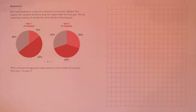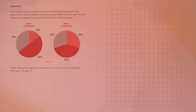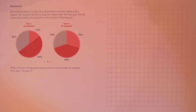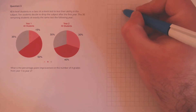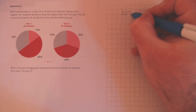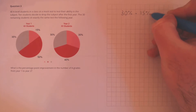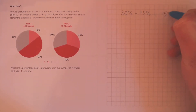Question 3. 40 A-level students in a class sit a mock test. 10 students decide to drop the subject after the first year. The 30 remaining students sit exactly the same test the following year. What is the percentage point improvement in the number of A grades from year one to year two? Instead of working out percentage increase, we're working out the percentage point improvement — the difference in proportion from year one to year two. So we take the year two proportion, 30%, and subtract 15%, giving our answer of 15%.